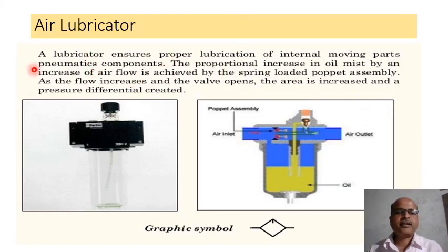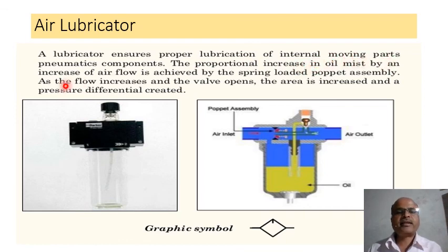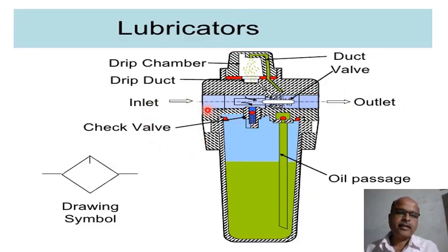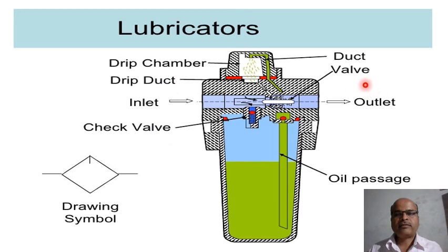The next component in a pneumatic system is the air lubricator. A lubricator ensures proper lubrication of internal moving parts of pneumatic components. The proportional increase in oil mist with an increase of air flow is achieved by a spring-loaded puppet assembly. As flow increases and the valve opens, the area increases and a pressure differential is created. The graphical symbol and detailed structure of the lubricator are shown, including the drip chamber, drip duct, inlet check valve, duct valve outlet, and oil passage.